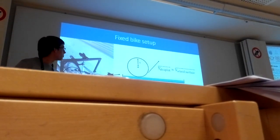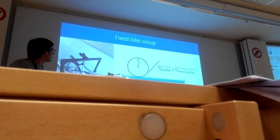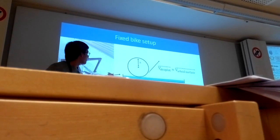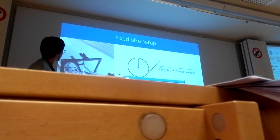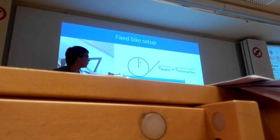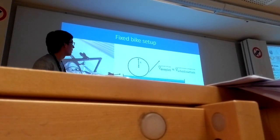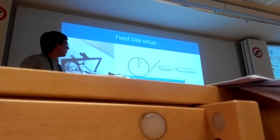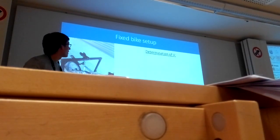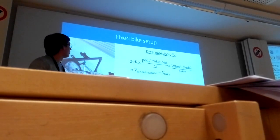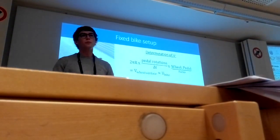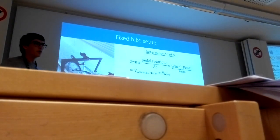This will be our first setup. We have a fixed bike under which we put a rail with water in it, and we consider that the wheel touches only the water in a small surface. We consider that the volume of water is much larger than the volume displaced, and that the speed of the droplet is exactly the same as the wheel surface. To determine the velocity of the wheel, we measure the time during which we achieve a certain number of pedal rotations.